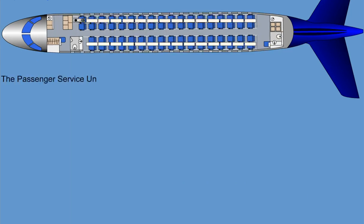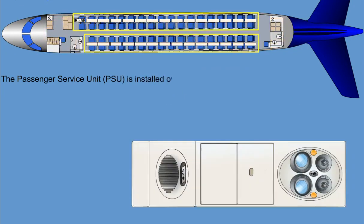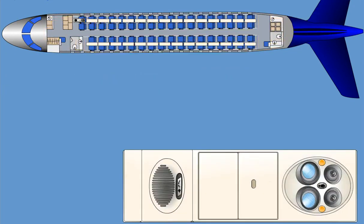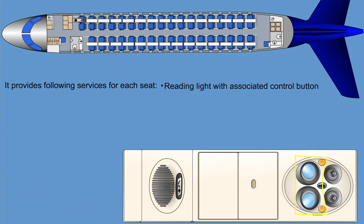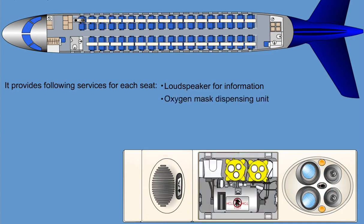A passenger service unit, PSU, is installed over each seat row. It provides the following services: passenger information signs including no smoking and fasten seat belt signs, a reading light with associated control button at each passenger seat, gasper air for each individual passenger seat, a push button and indicator for cabin crew call, a loudspeaker for information from the flight and cabin crew, and oxygen mask dispensing units.